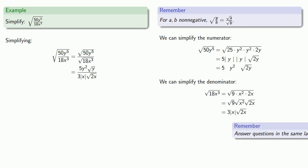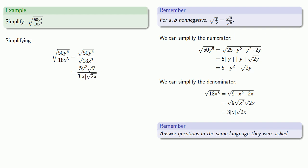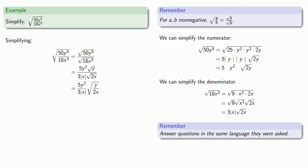Here's an important idea: we should answer questions in the same language they were asked. The original question was a square root of a quotient, but our answer is a quotient of square roots. So we should recombine and rewrite it as a square root of a quotient. And this resolves our earlier concern: if the original expression has any meaning, the original radicand must be non-negative, which means x and y must have the same sign. Even if both are negative, in the final simplified form the radicand will still be non-negative.